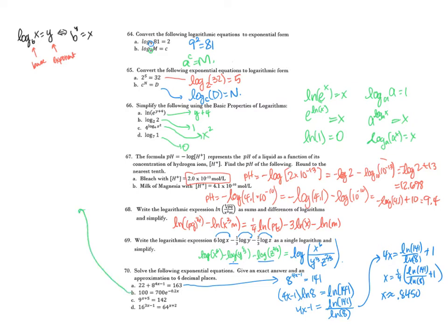For the next equation, divide both sides by 700 to get 1/7 equals e to the negative 0.2x. Then take the natural log of both sides and divide by negative 0.2. The approximation gives x approximately equal to 9.7296.